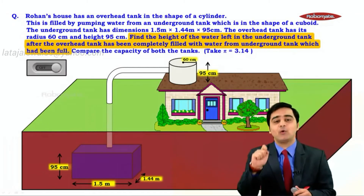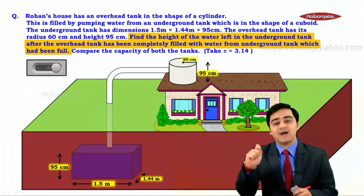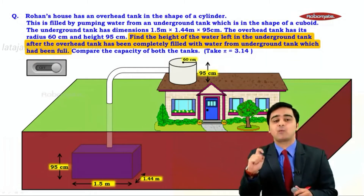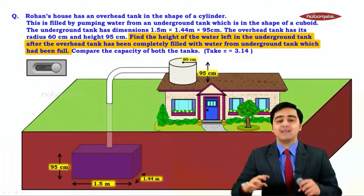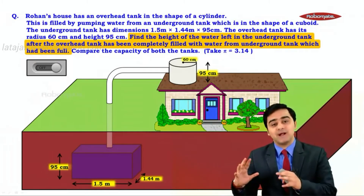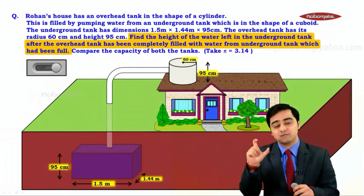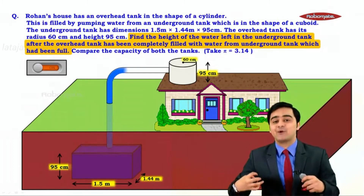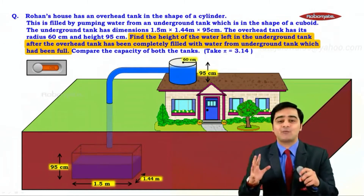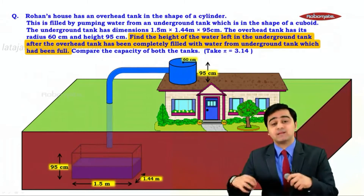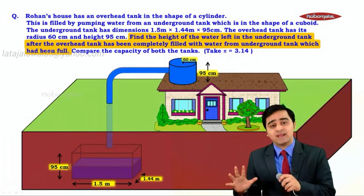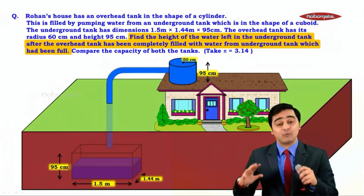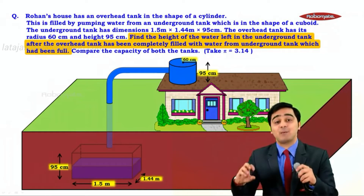We need to find the height of the water left in the underground tank after the overhead tank has been completely filled with water from the underground tank, which had been full. Water flows from the underground tank to the overhead tank when we turn on the switch. Water occupies space, and space simply means volume, so we are going to discuss volume in this problem.